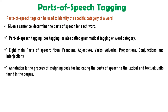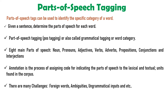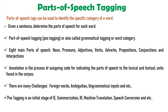Annotation is the process of assigning codes indicating parts of speech to lexical and textual units found in the corpus. Parts of speech annotation is needed for certain reasons — it is used by computers to predict parts of speech for textual elements from context. There are many challenges in POS tagging like foreign words, ambiguities, and grammatical inputs. POS tagging is the initial stage of information extraction, summarization, machine translation, and speech conversation. Parts of speech tags are also known as word classes, morphological classes, or lexical tags, used to choose grammatical tags for words on the basis of linguistic features.